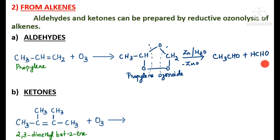Since we are making use of an unsymmetrical alkene, we are getting two different aldehydes. If you use a symmetrical alkene, you will get the same type of aldehyde.